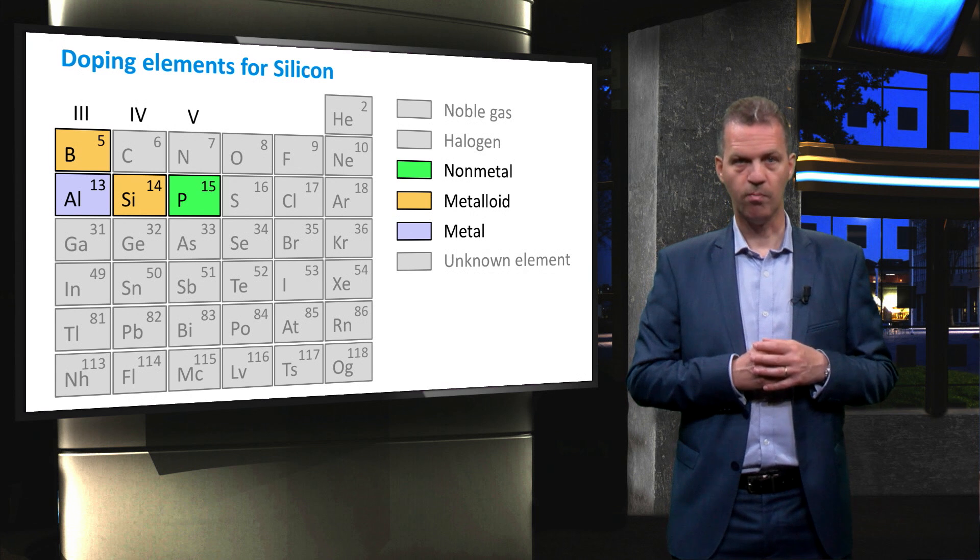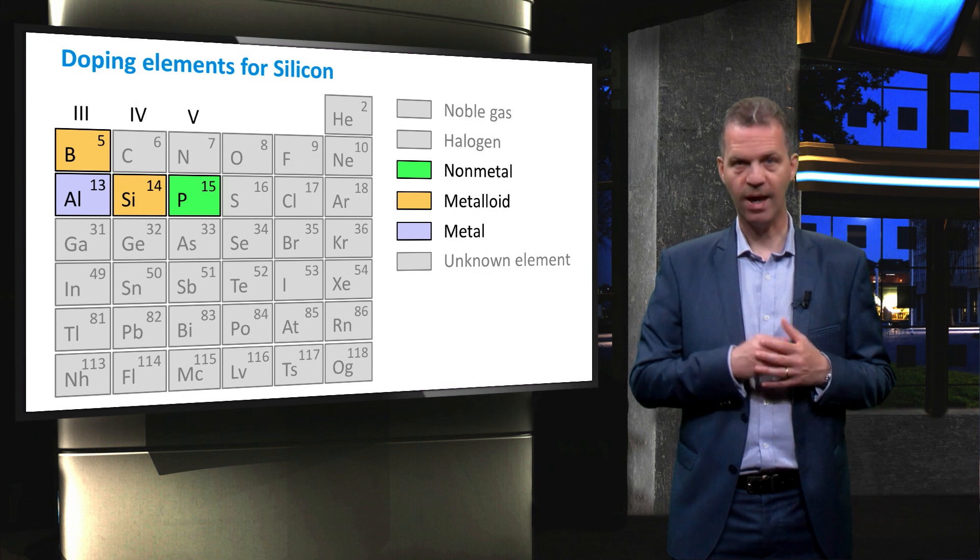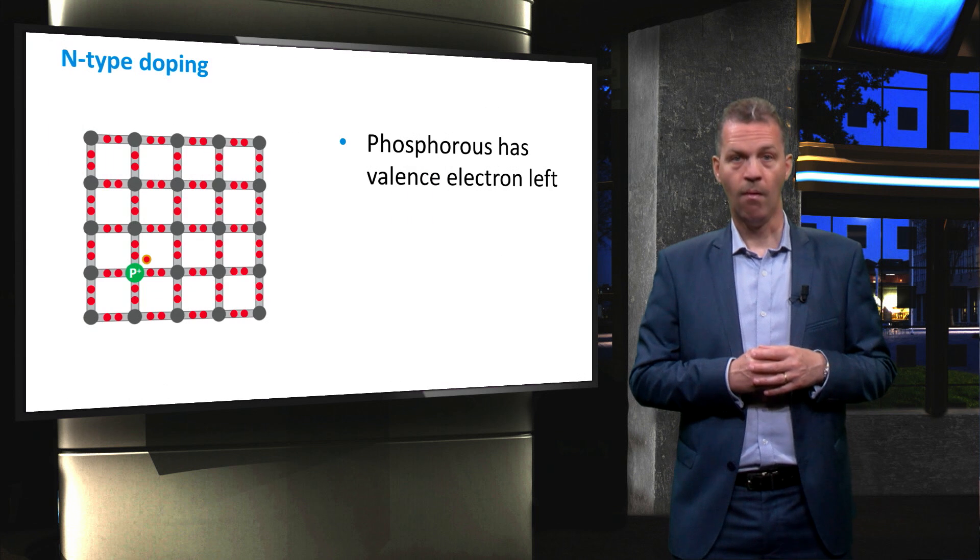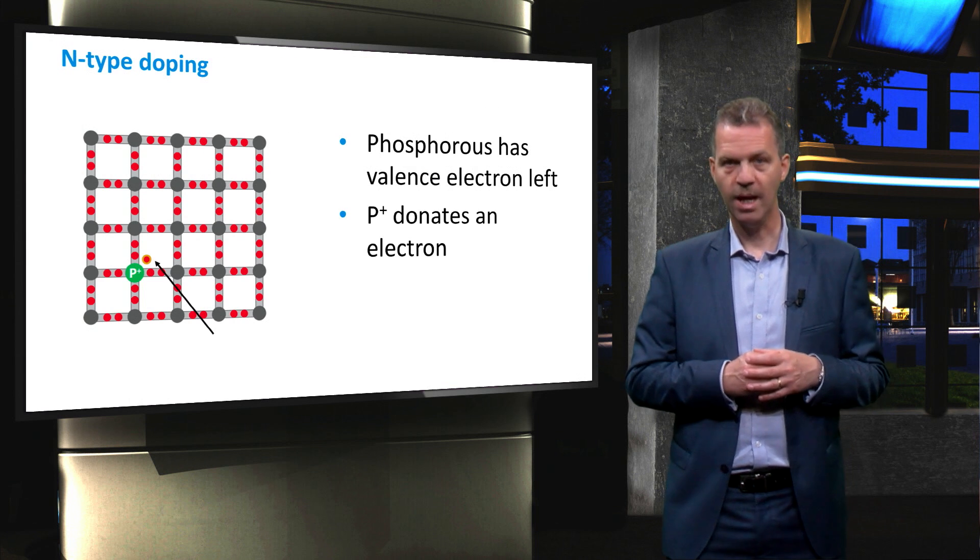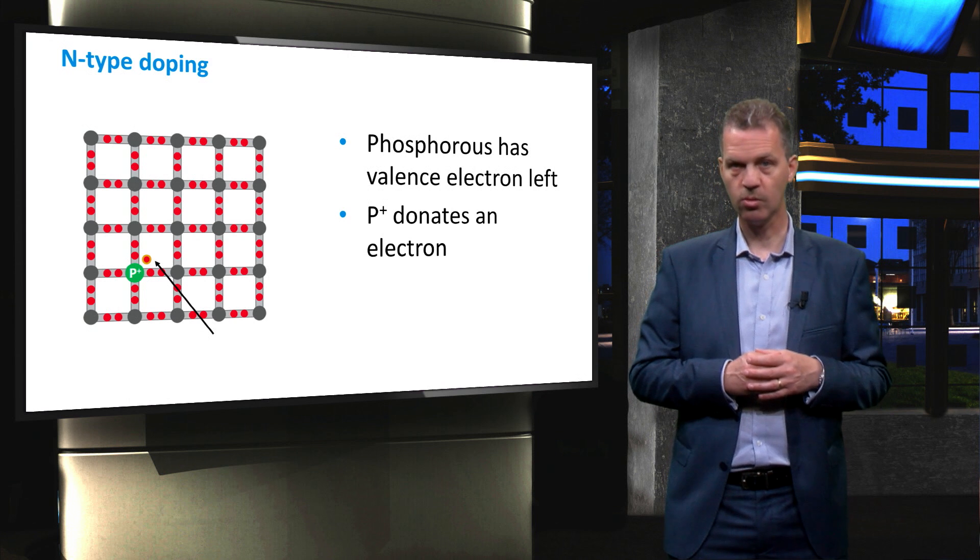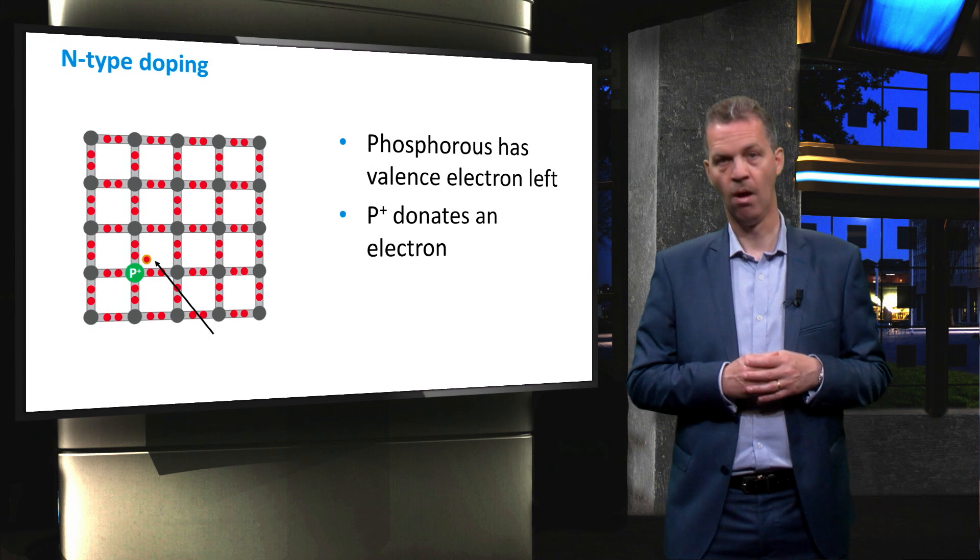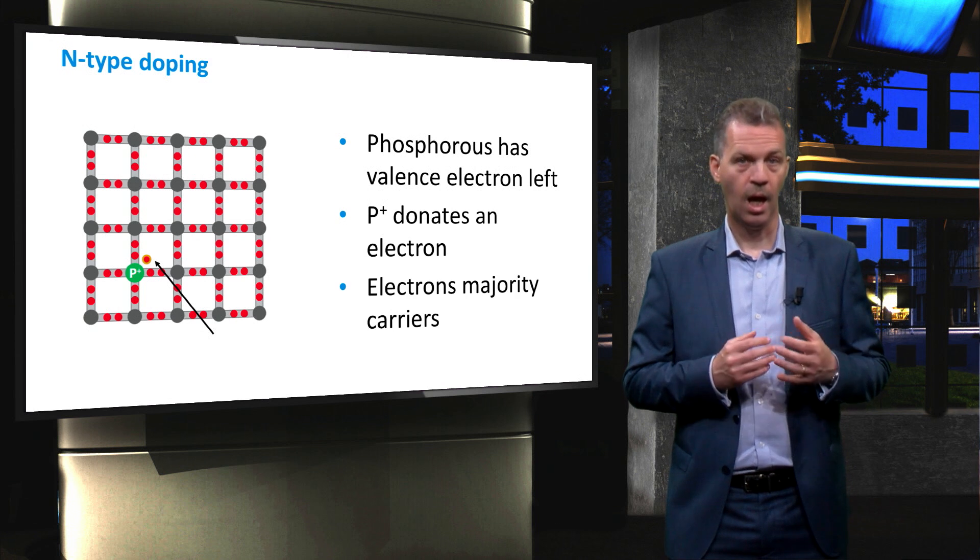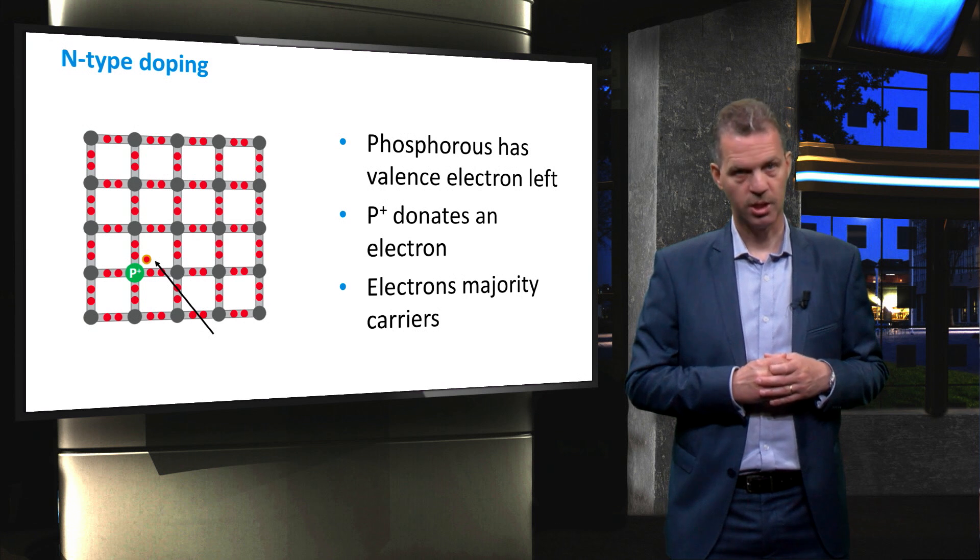To obtain n-type doping, phosphorus can be introduced, which is a group 5 element and has 5 valence electrons. When phosphorus substitutes a silicon atom in the lattice, the remaining electron is donated to the conduction band, and n-type silicon is obtained. Phosphorus is therefore called a donor. In an n-type semiconductor, electrons are the majority charge carriers.